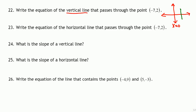For any vertical line — it could be on the right side or left side of the y-axis — if it passes through a point a comma b, then this distance is a. So the equation of this vertical line will be x equals that distance, because the slope is undefined. For a vertical line, x equals the first coordinate, which is negative 7.